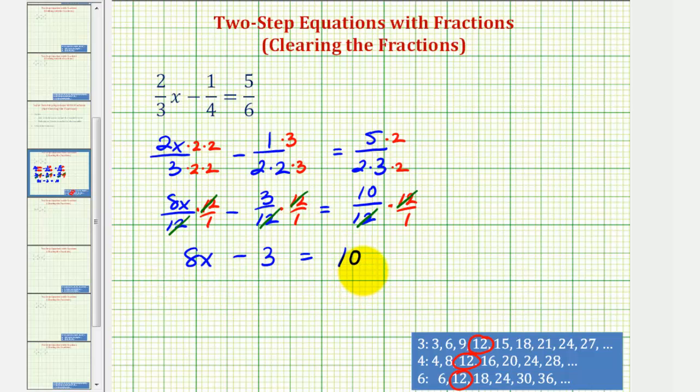Now this is quite a bit of work, so I do want to point out that if we did recognize that twelve was the LCD of the fractions, we could multiply each fraction in the original equation by twelve and get the same equation that we have here. Now let's go ahead and show this.